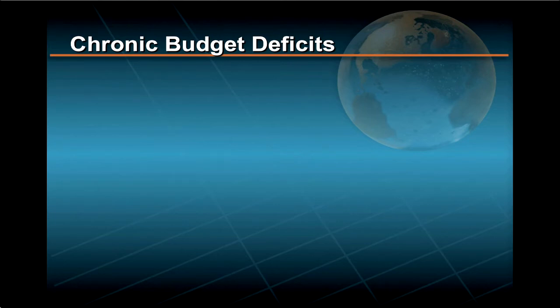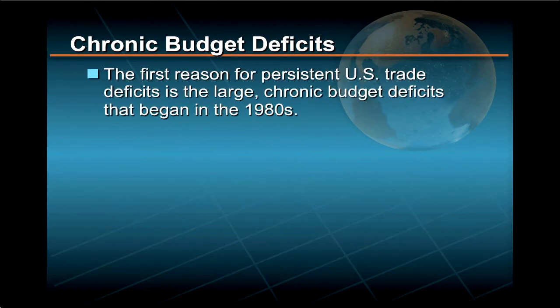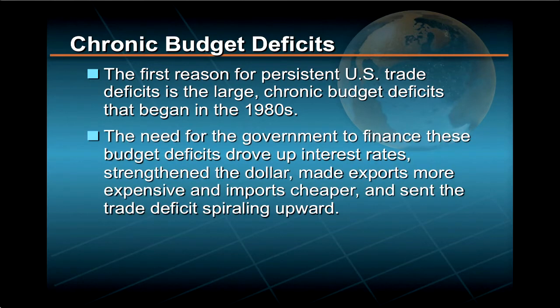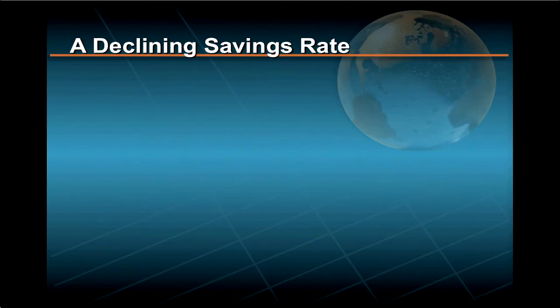The first, of course, is the large chronic budget deficits that began in the 1980s. As we have discussed, the need for the government to finance these budget deficits drove up interest rates, strengthened the dollar, made exports more expensive and imports cheaper, and sent the trade deficit spiraling upward.